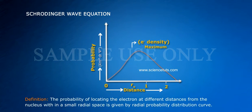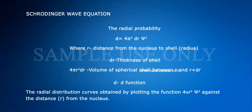The Radial probability D equals 4πr²dr·ψ², where r is distance from the nucleus to shell (radius), dr is thickness of shell, and 4πr²dr is volume of spherical shell between r and r plus dr. The Radial distribution curves obtained by plotting the function 4πr²ψ² against the distance r from the nucleus.